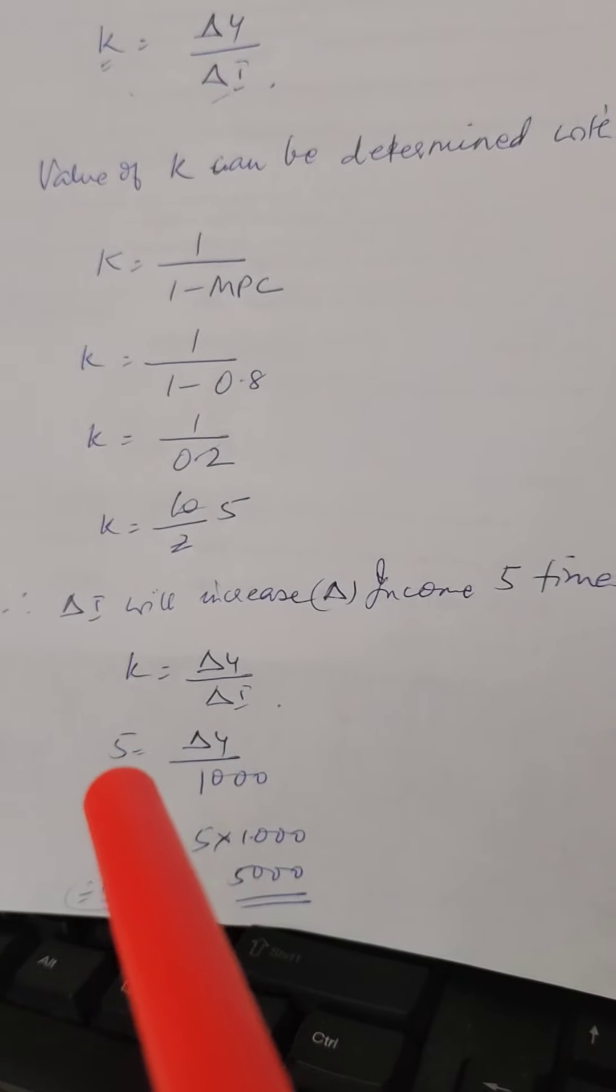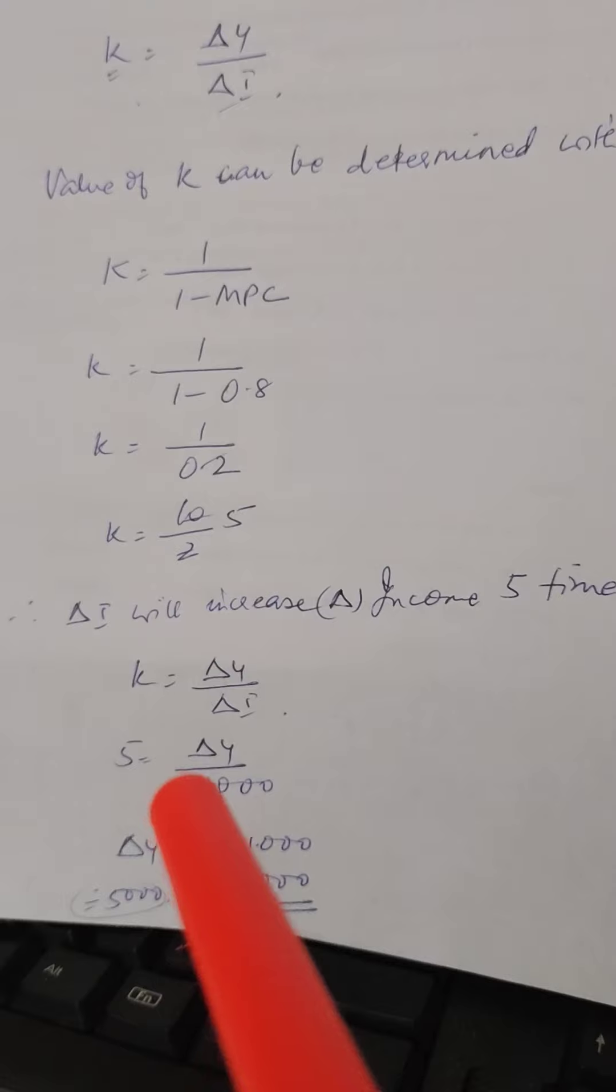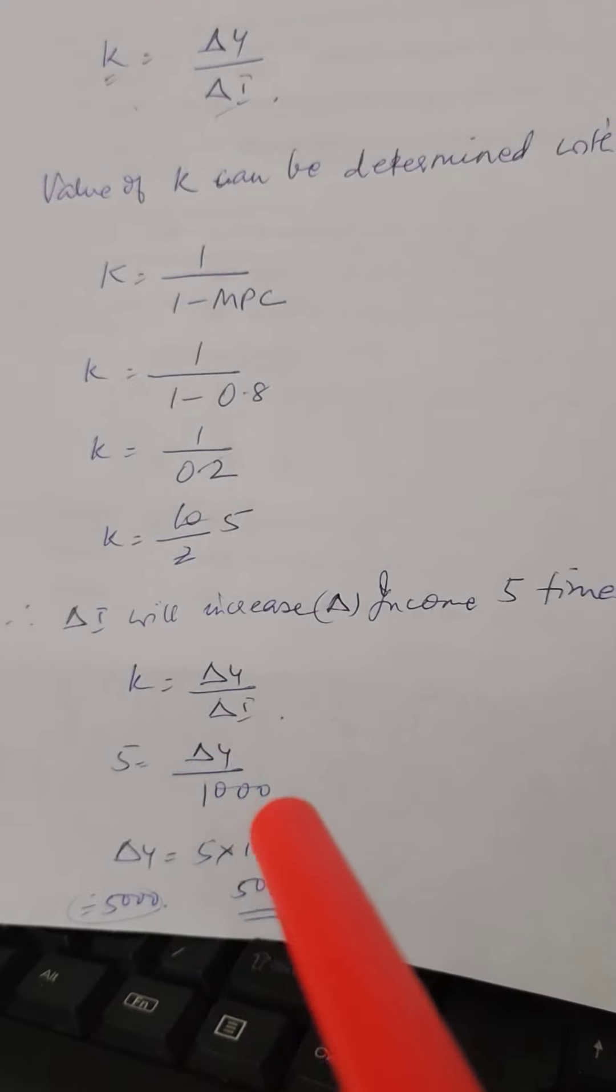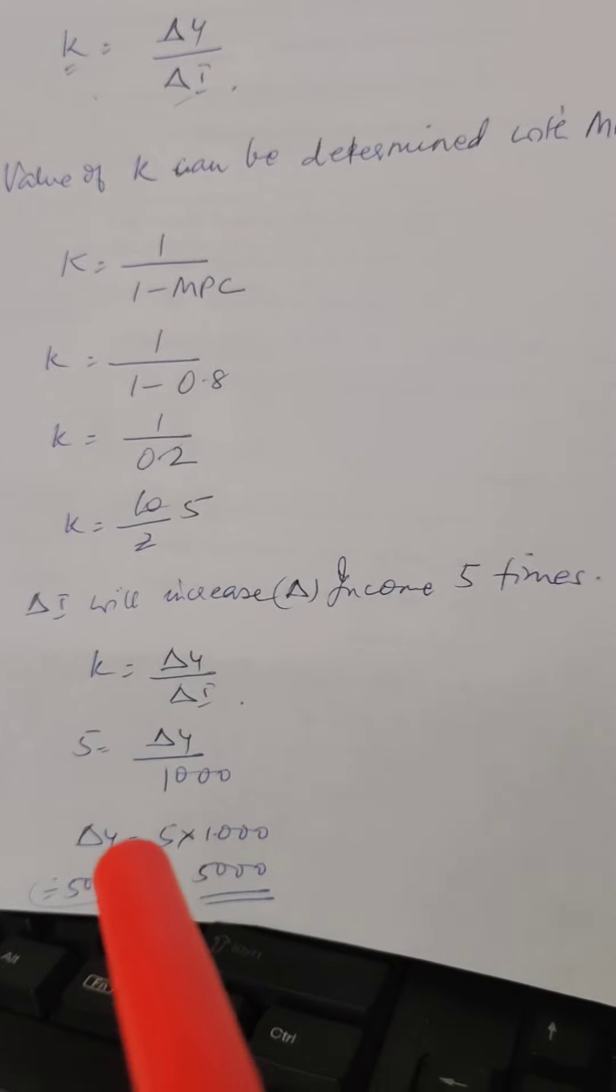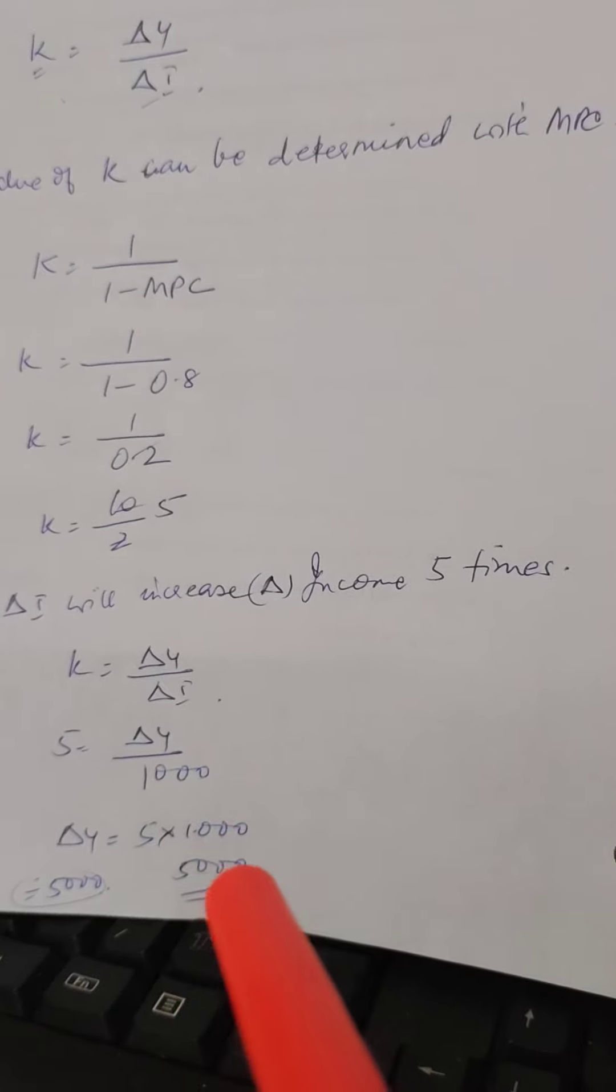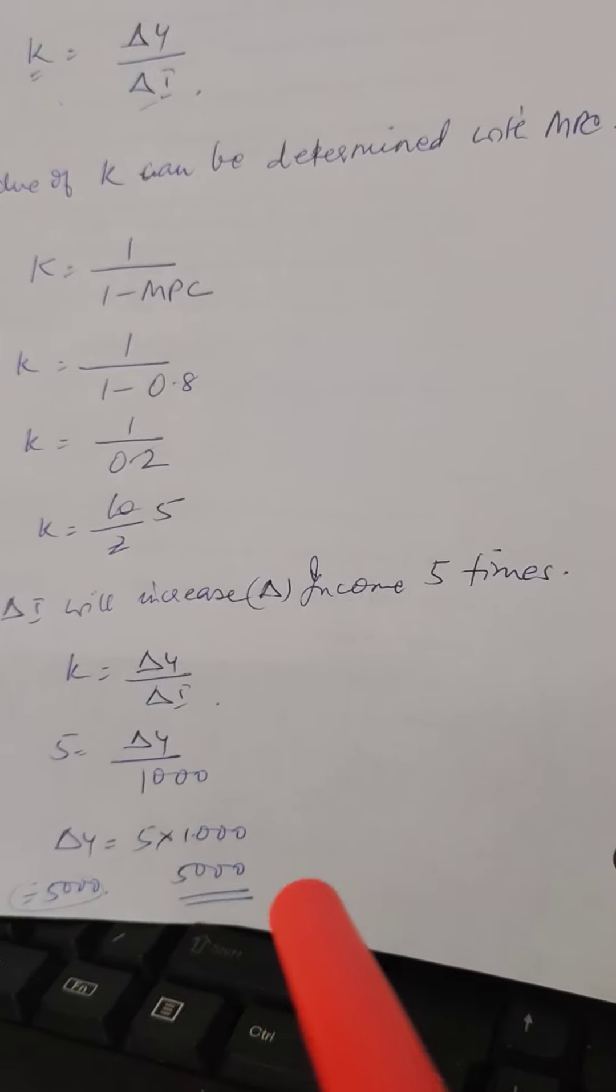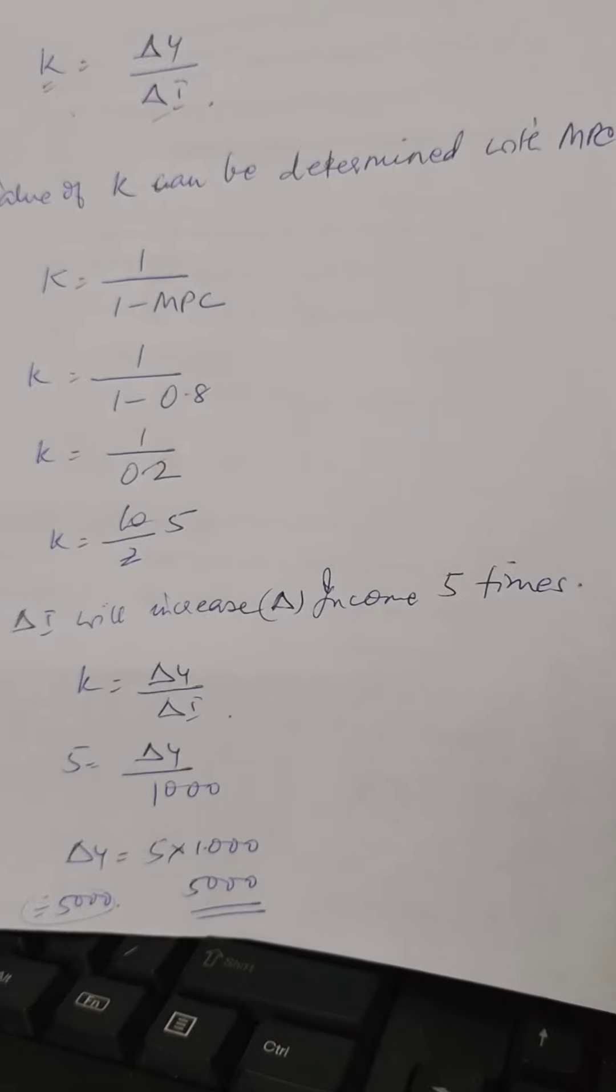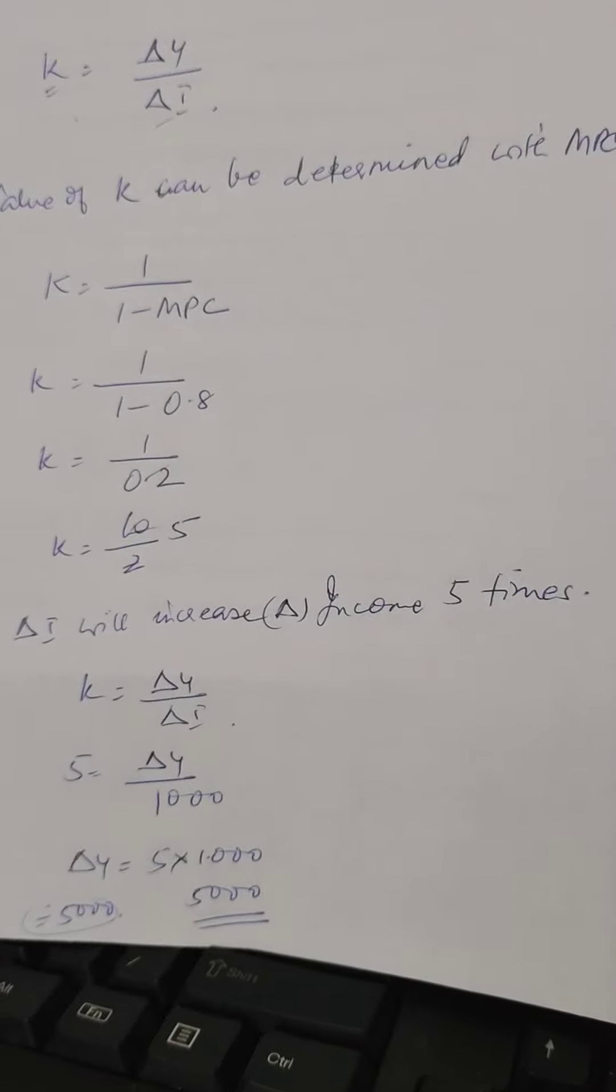We found the multiplier is 5. Change in Y will be 5 times the change in investment. So it's 5,000. Change in Y = 5,000 crores.